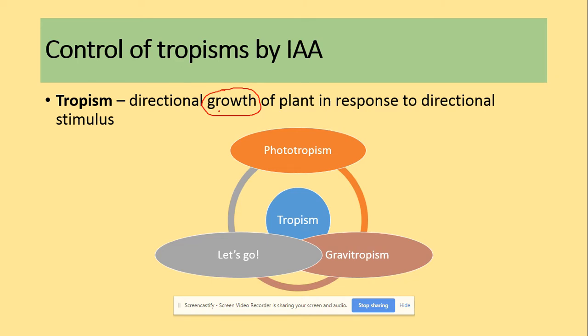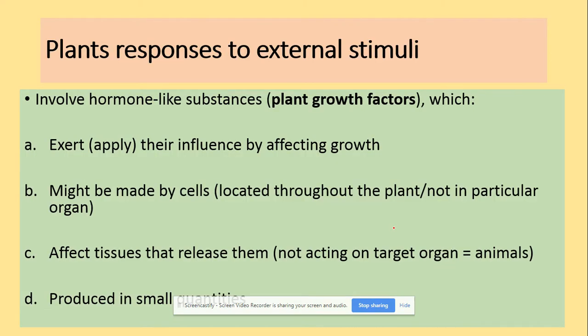The other two were to do with movement; this is about growth. What they have in common with taxes is direction — they can either grow towards the stimulus or away from the stimulus. The two main things for our specification are phototropism and gravitropism. When plants respond to external stimuli, they involve hormone-like substances called plant growth factors. These apply their influence by affecting growth, they may be made by cells, they affect the tissues that release them, and they are produced in small quantities.